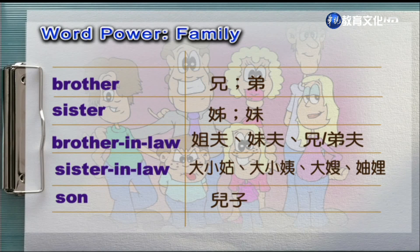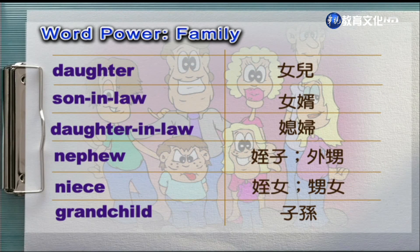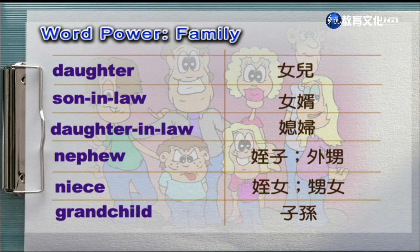我们接下来看一下下一张字卡。Brother, sister, brother-in-law, sister-in-law, son. 好，在这边也是一样，in-law就是因为结婚关系而产生的，比方说像大嫂、总理这样子的用法。接下来我们看下一张字卡：Daughter, son-in-law, daughter-in-law, nephew, niece, grandchild. 在这张字卡里面也有in-law的用法，还有nephew跟niece的用法。Nephew就是男生的意思，niece是女生，但是不管是侄女或者是外甥女，都是用niece这样子一个用字。